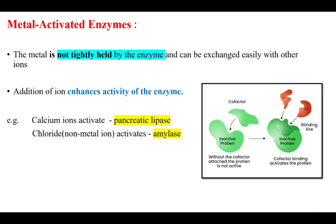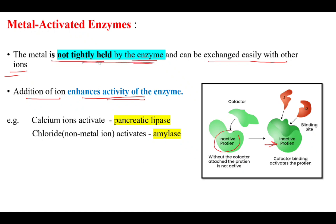Metal activated enzymes are different — the metal is not held tightly by the enzyme and can be easily exchanged with other ions. The addition of an ion enhances the activity of the enzyme, so the inactive enzyme becomes active. The main difference from metalloenzymes is that the metal is not tightly held and can be easily exchanged with other ions.